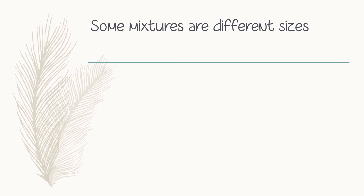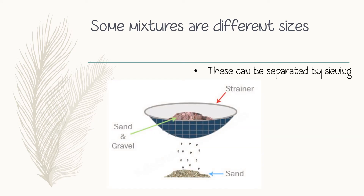The next mixture we find is one where there are mixtures of different sizes. These can be separated by sieving. For example, if we look at the picture you will see sand and gravel. When you throw both of them in a strainer, the gravel will stay behind and the sand will fall through.